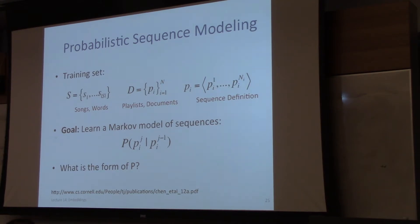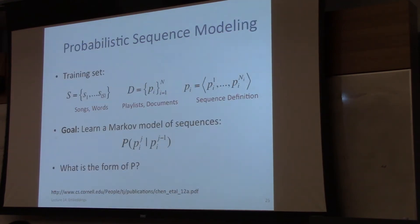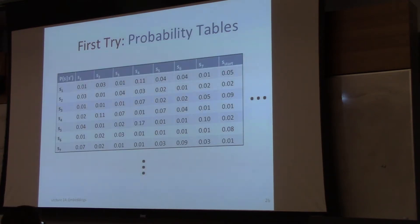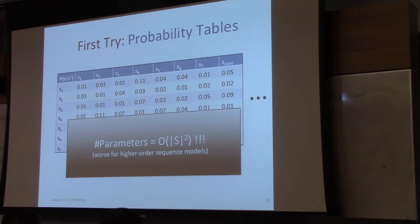One question is: what should be the form of this probability function? This is a discrete number of songs and words — could be very large, like a million. We could write this as a probability table, but the number of parameters is quadratic in the number of items in your ground set. There's a million songs in Spotify — that's 10 to the 12 parameters in this parameter matrix, which is huge.